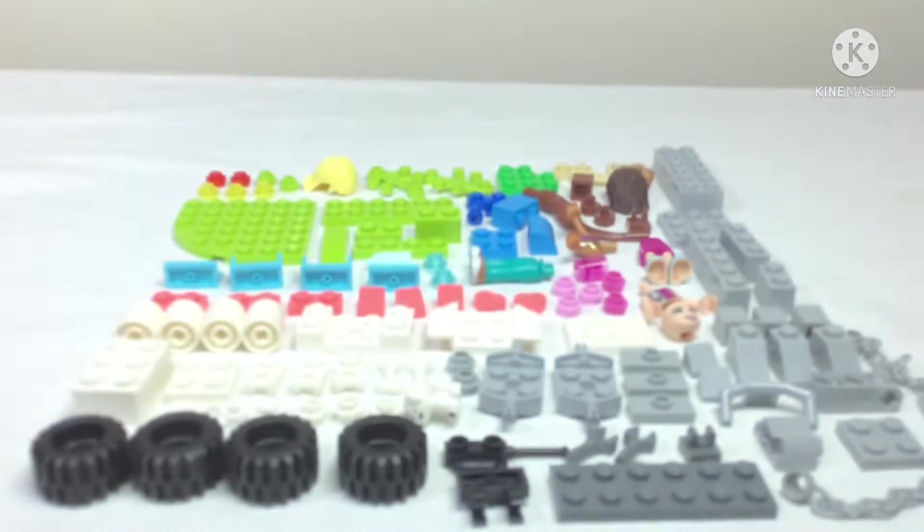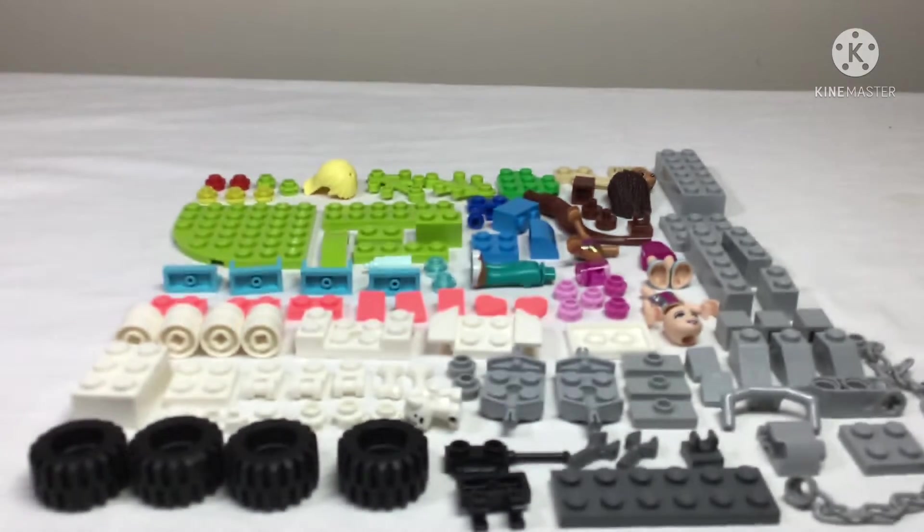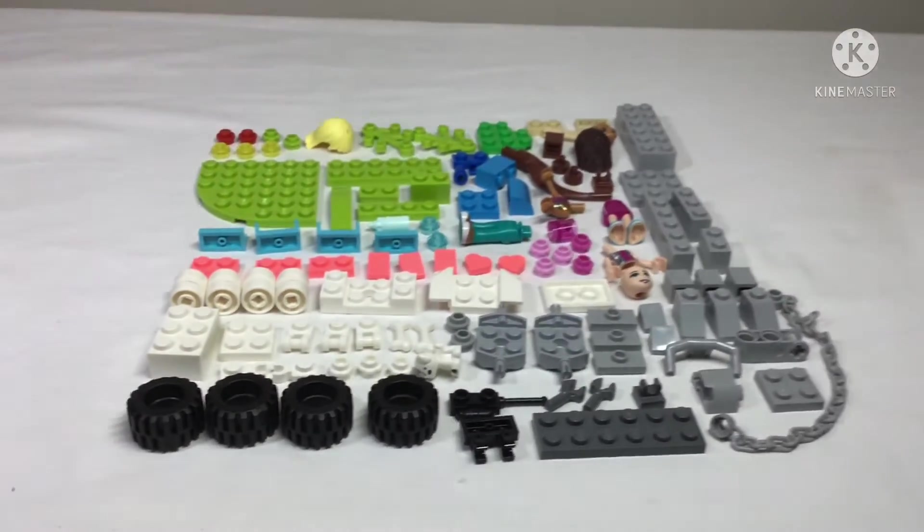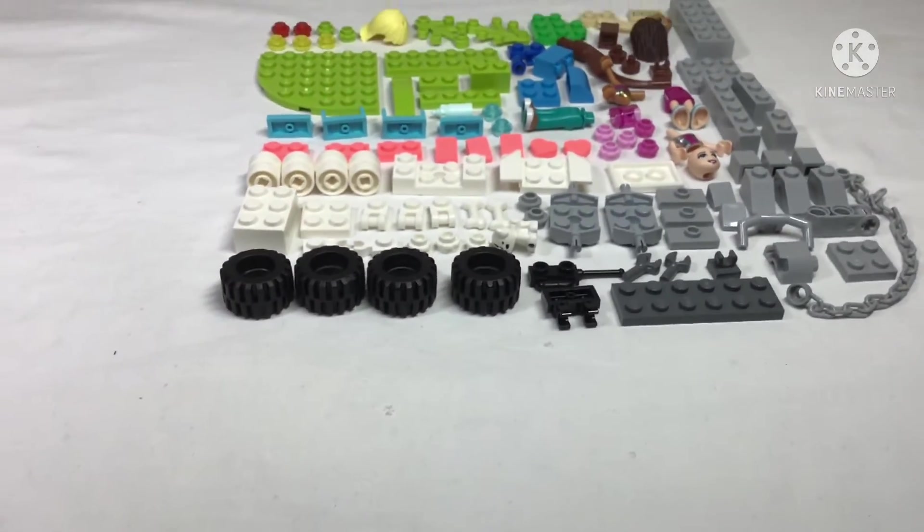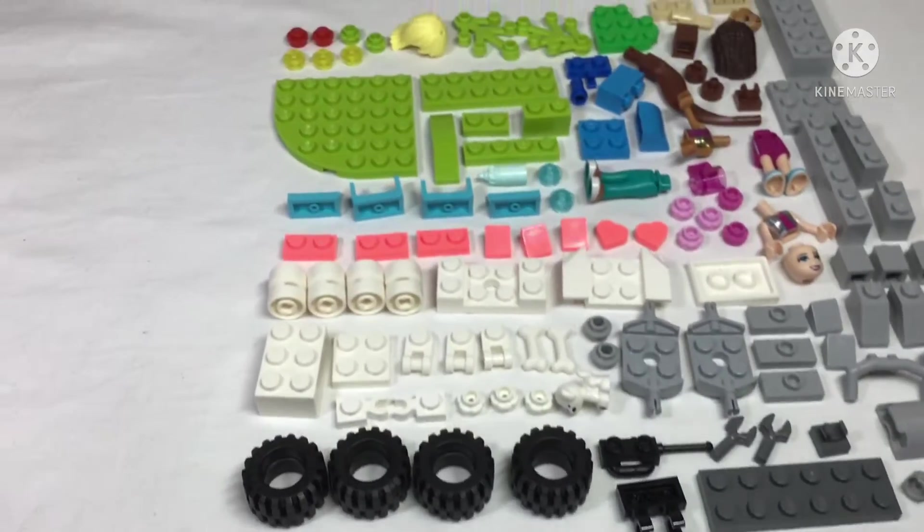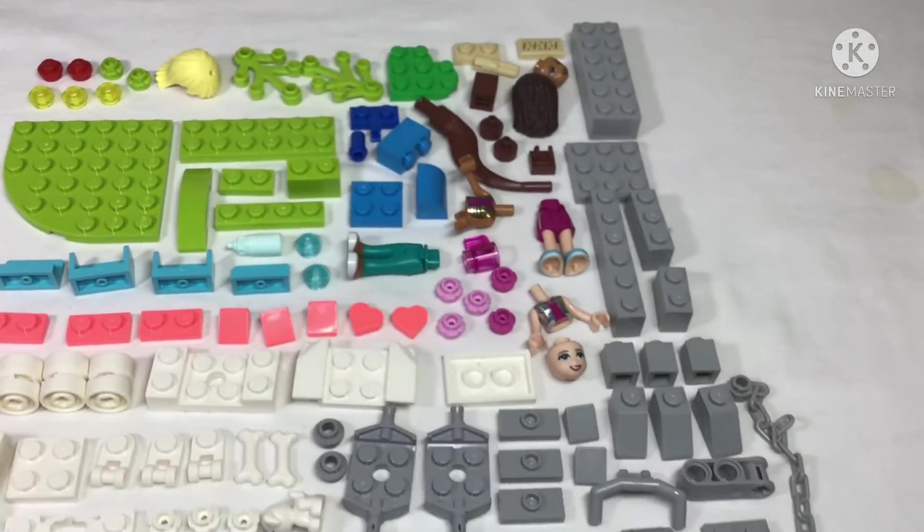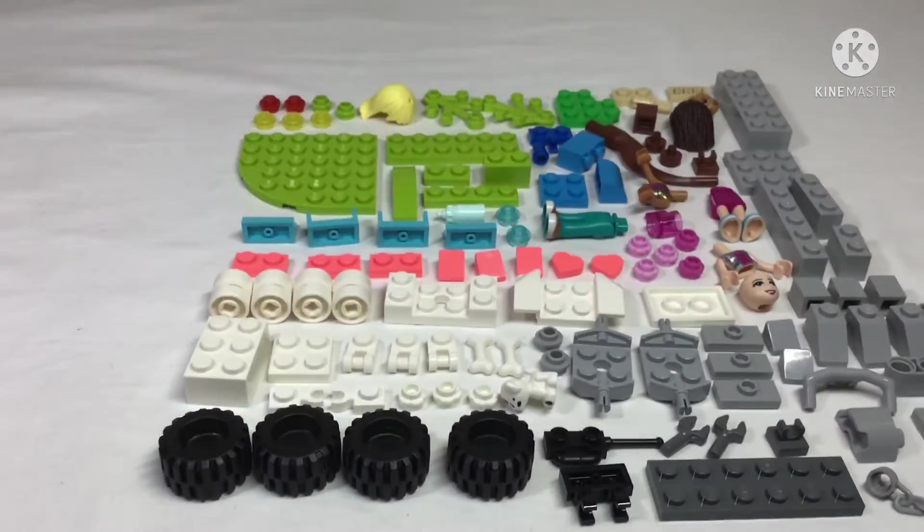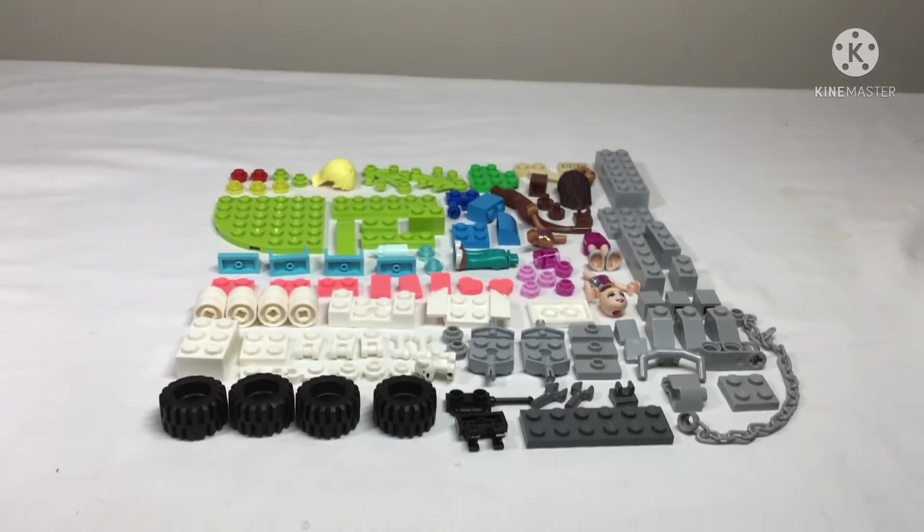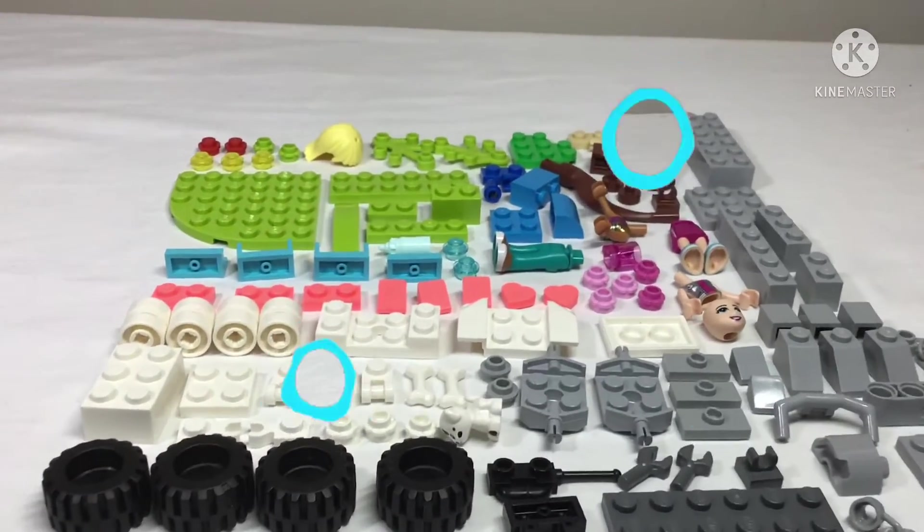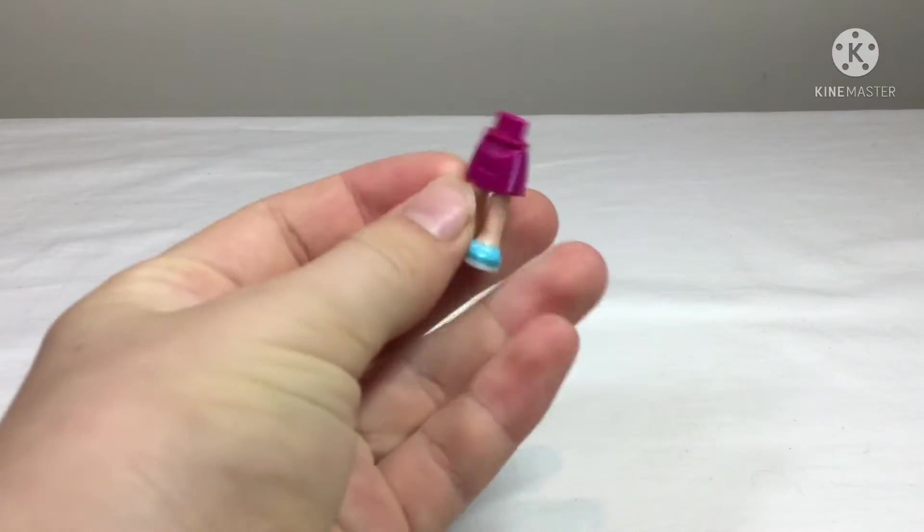The pieces before and after sorting. In this set there are about 100 pieces, which is pretty good value for the price, at least in Australia. You have lots of rainbow colors, so let's get building.